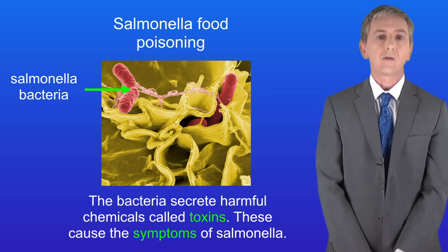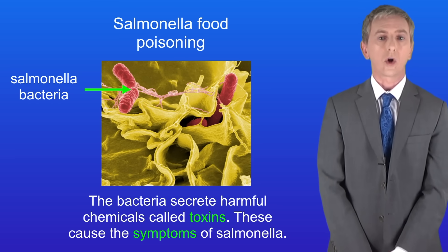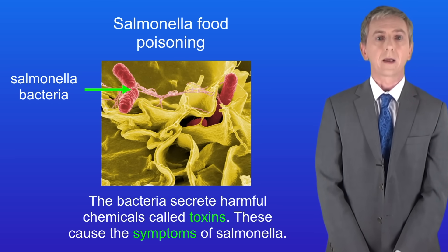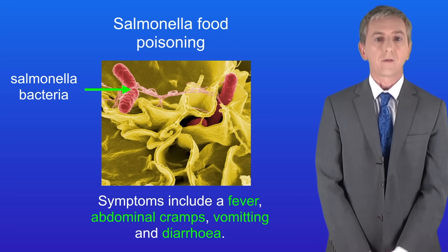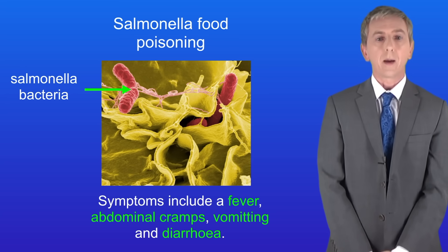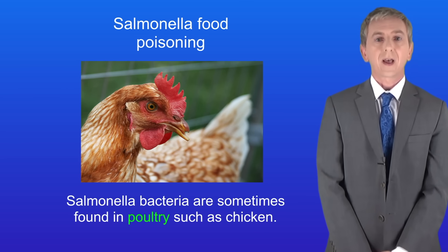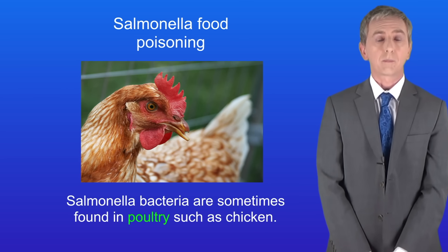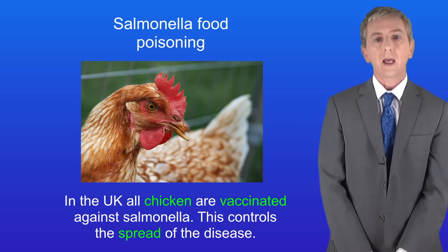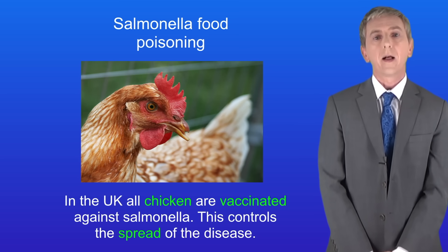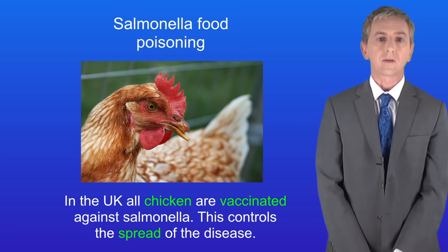The salmonella bacteria secrete harmful chemicals called toxins, which cause the symptoms of salmonella. These symptoms include a fever, abdominal cramps, vomiting, and diarrhoea. Salmonella bacteria are sometimes found in poultry such as chicken. However, in the UK all chickens are vaccinated against salmonella, and this controls the spread of the disease.